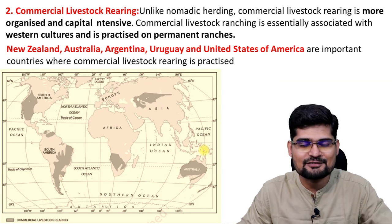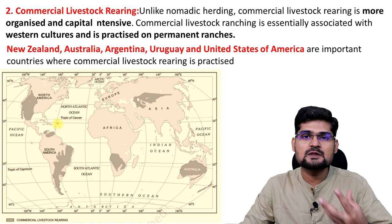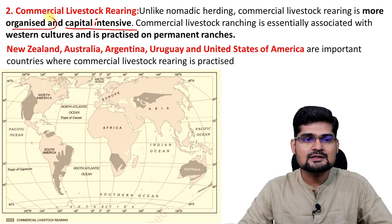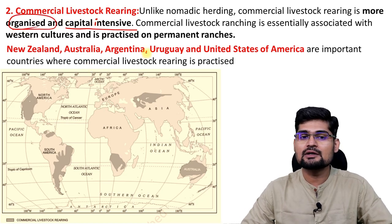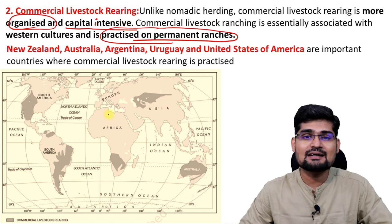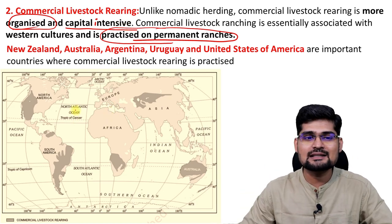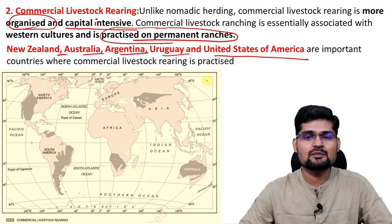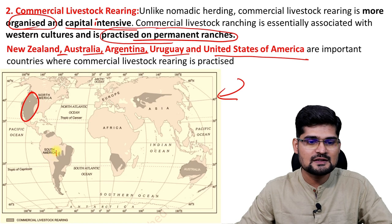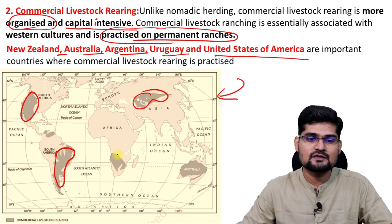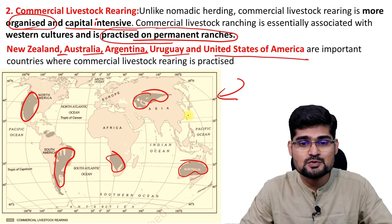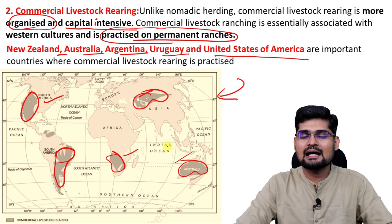Then comes commercial level of livestock rearing. It's commercial, meaning people rear animals for commerce, so it becomes capital intensive and is organized. An important point: it is practiced on permanent ranches — unlike nomadic herders who are not permanent settlers. Countries famous for this include New Zealand, Australia, Argentina, Uruguay, and the United States of America. These maps are very important when preparing for civil services examinations or university exams, so locate the major areas of the world where this kind of activity is found.